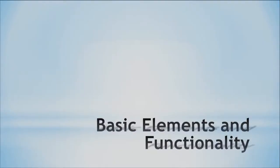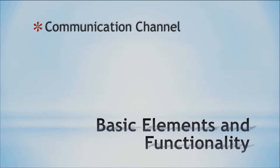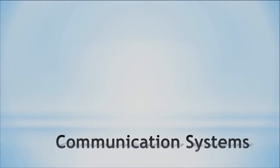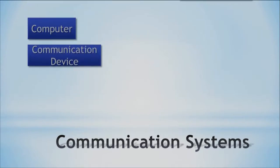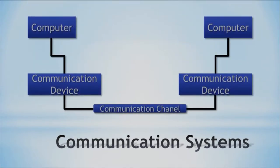The communication channel itself is the media — the fact that you can send something at all. It can be wired or wireless. The wires we can see; the wireless we cannot. A communication system looks something like this: we have a computer on each end, some communication devices, and the communication channel. This is overly simplified — the two end devices are computers, but I'm not specifying what kind.